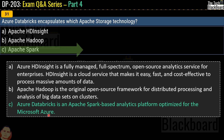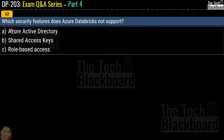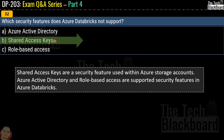Those were one-liner definitions of each option. Moving on to question number 32: which security feature does Azure Databricks not support? Your options are Azure Active Directory, shared access keys, or role-based access. The correct answer is option B, shared access keys. Shared access keys are a security feature used within Azure storage accounts, whereas Azure Active Directory and role-based access are supported security features in Azure Databricks.